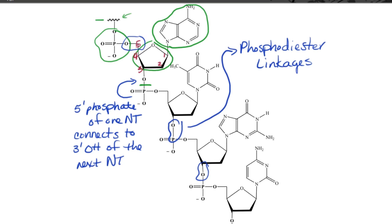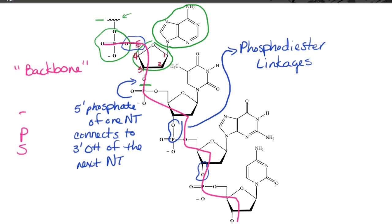Another thing to point out is that the bases are not involved in any way whatsoever in joining together the individual nucleotides — they really just kind of stick out to the side. This zigzag pattern here is what we commonly refer to as the backbone. Notice that the backbone, starting from the bottom, is sugar-phosphate, sugar-phosphate, sugar-phosphate, and so on the whole way up. So we say it is alternating sugars and phosphate groups that make up the backbone of the molecule.